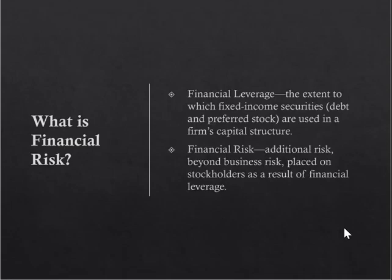Financial risk is driven by factors beyond business risk — it's based on how your capital stack is structured. It's the extent to which fixed income securities like debt and preferred stock are used in a firm's capital structure. Debt and preferred stock don't participate in the company's profits; their return is fixed. Common stock participates in profits, but debt and preferred stock must be paid first. The more debt and preferred stock you have, the more leverage you have — and leverage is a very powerful thing, for good and for bad.